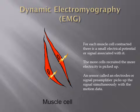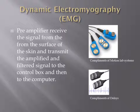A sensor called an electrode, or specifically a signal preamplifier, picks up the signal simultaneously with the motion to capture data mentioned in previous videos. Preamplifiers receive the signal from the surface of the skin and transmit the amplified and filtered signal to a central control box and ultimately to a computer, combining it with the other motion capture data.